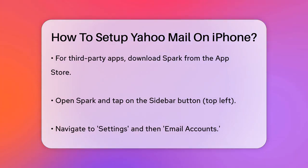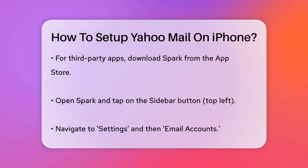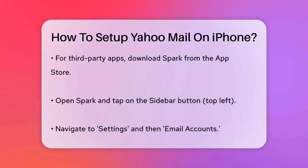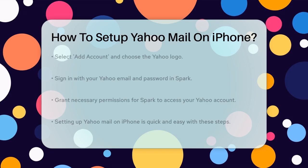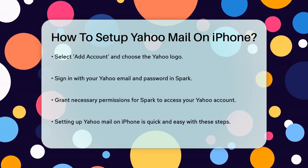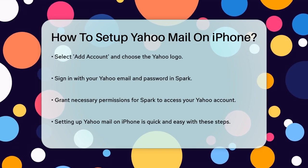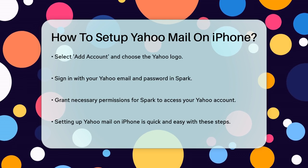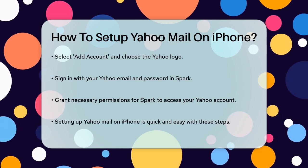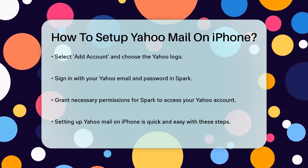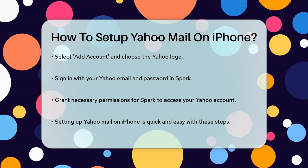If you prefer using a third-party email app like Spark, you can do that too. Download and install the Spark Mail app from the App Store. Open Spark, tap on the sidebar button at the top left, go to Settings, then Email Accounts, and finally Add Account. Choose Private Email Account and select the Yahoo logo. Sign in with your Yahoo email and password and grant the necessary permissions.